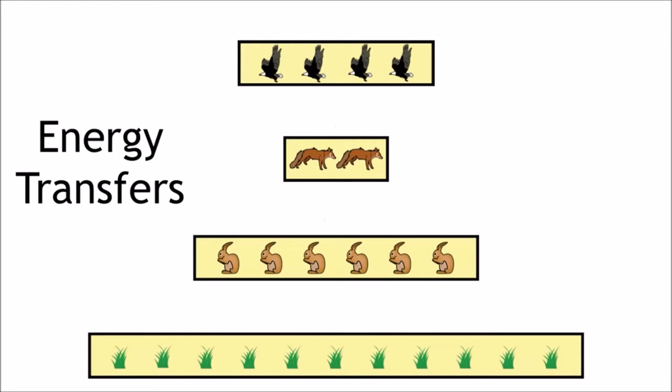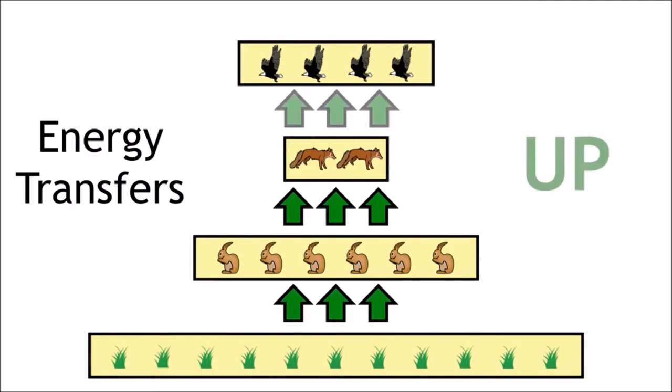In the ecosystem, the energy is being transferred up the pyramid as each organism is consumed by the organism in the next trophic level up.